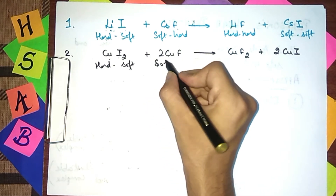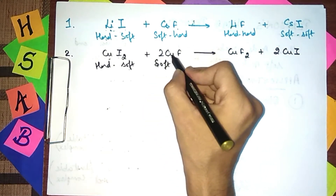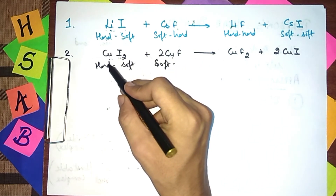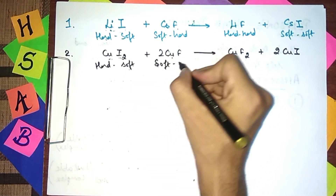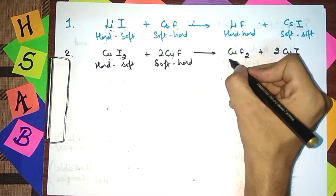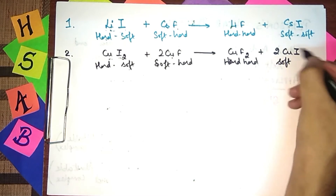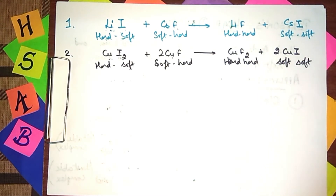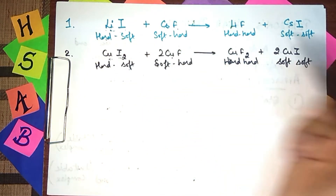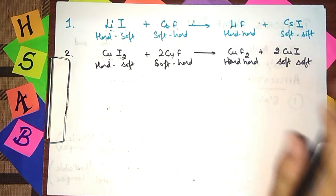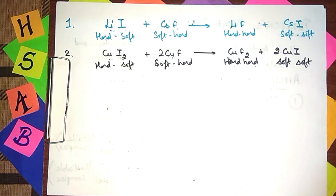Let us check the copper oxidation states. Copper with oxidation state +1 is Cu⁺, and +2 is Cu²⁺. Higher the oxidation state, harder will be the acid. So Cu²⁺ is a hard acid, forming a hard complex, while Cu⁺ is soft, forming a soft complex. In the forward reaction, we have hard-hard and soft-soft products — so the forward reaction is favored, not the reverse.